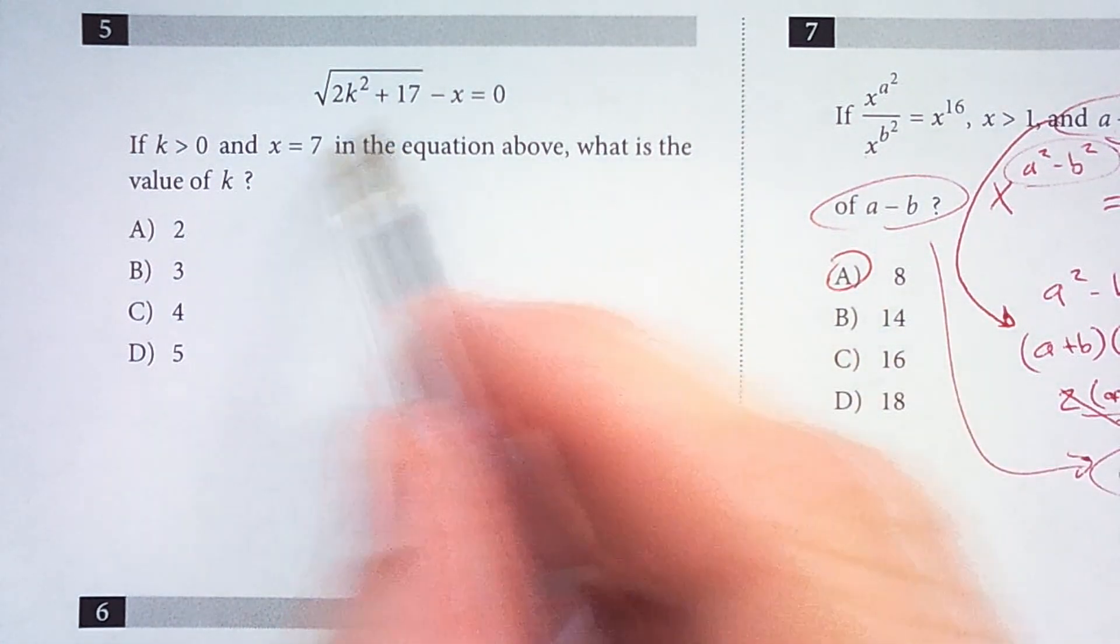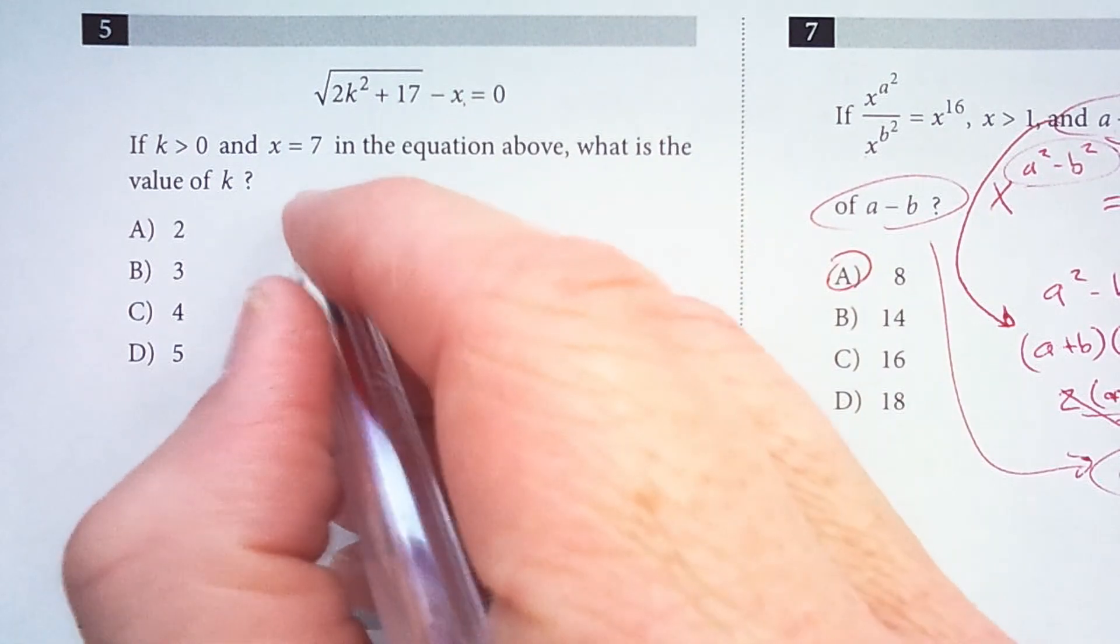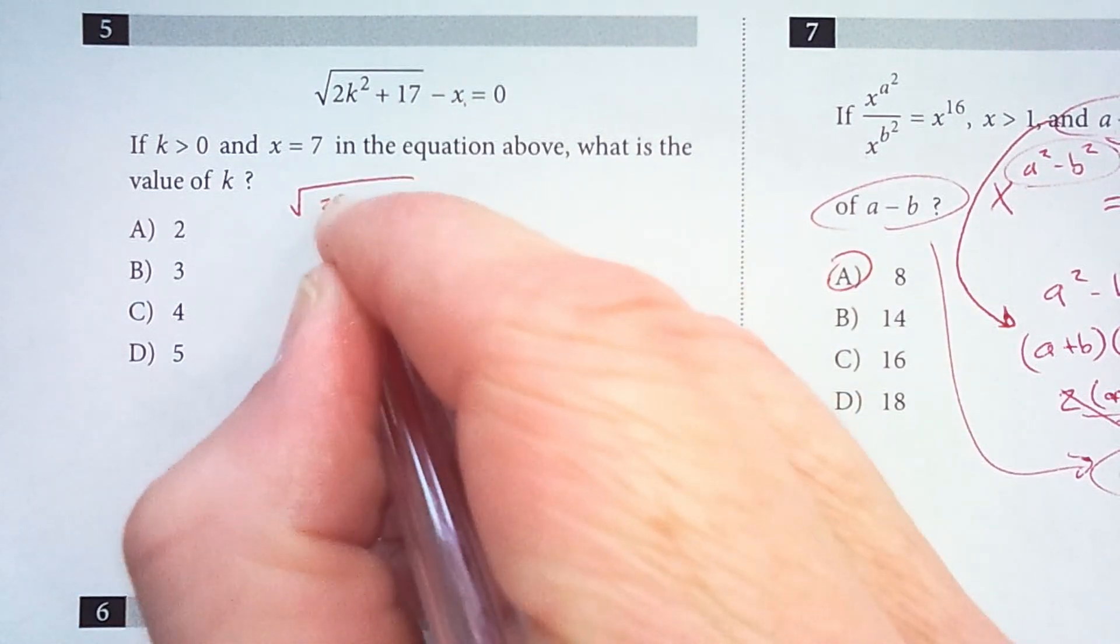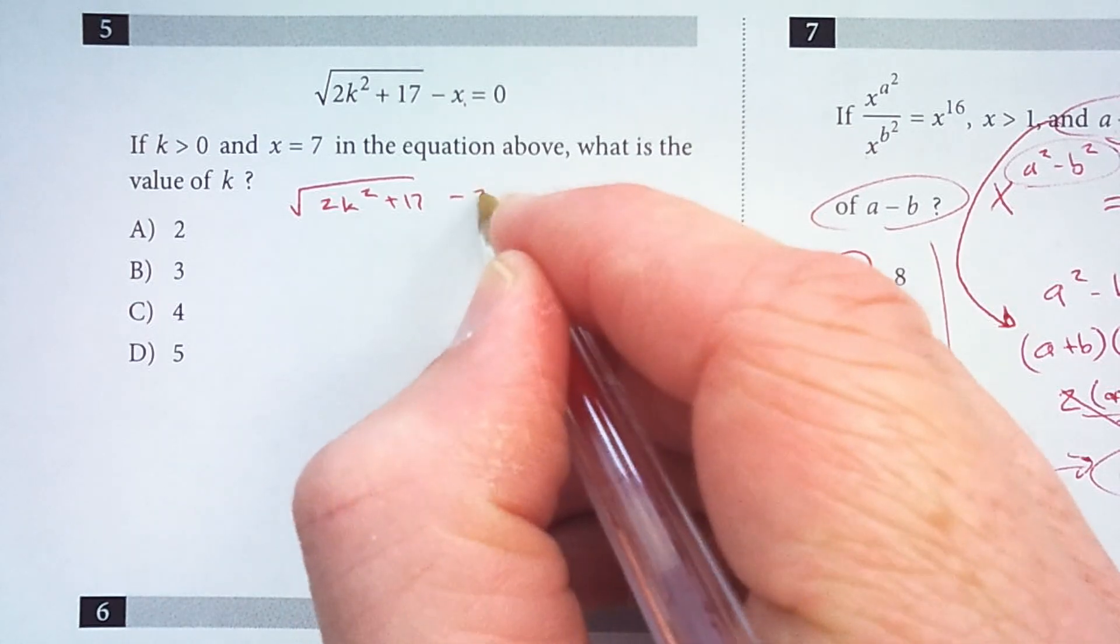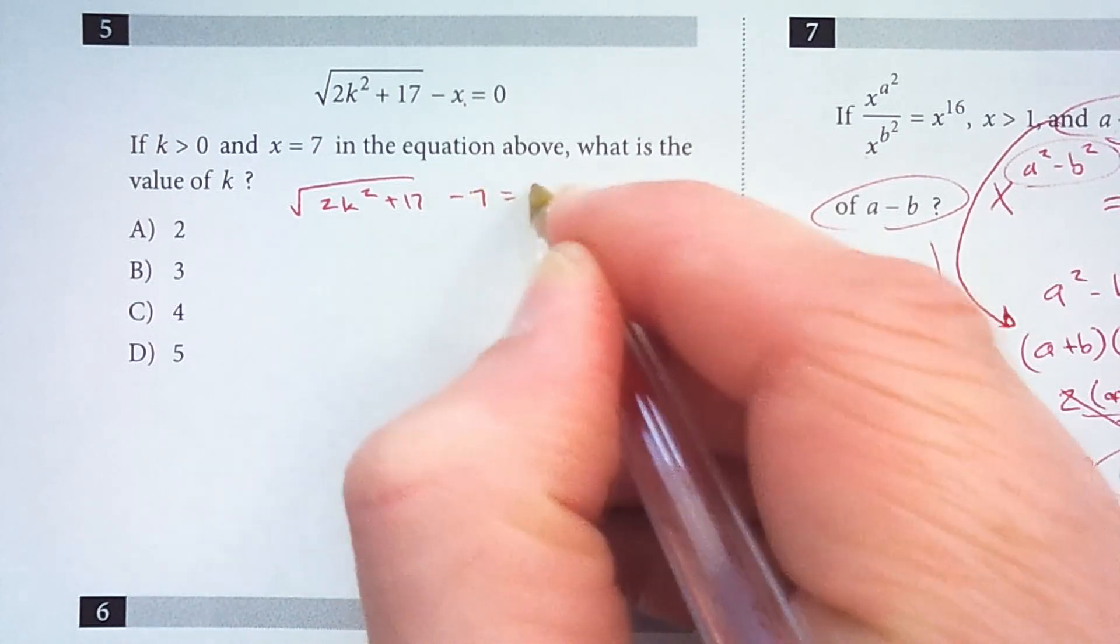So what I need to do is substitute seven in for x. So I've got the square root of 2k squared plus 17 minus seven equals zero.